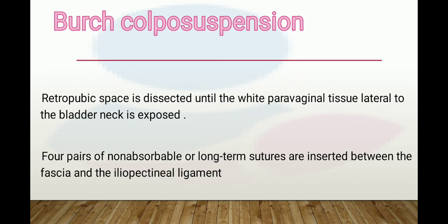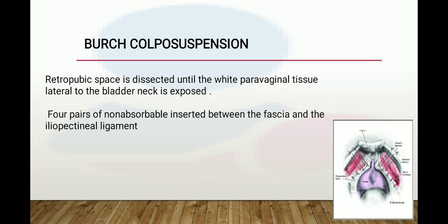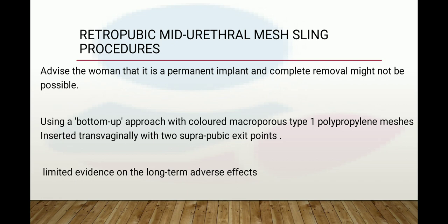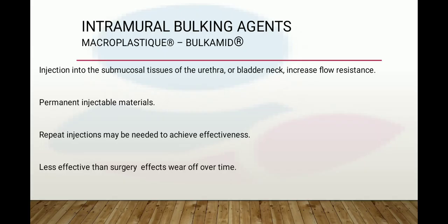Burch colposuspension involves dissecting the retropubic space until the wide paravaginal tissue lateral to the bladder neck is exposed, and four pairs of non-absorbable or long-term sutures are inserted between the fascia and iliopectineal ligaments. Complications include voiding difficulties (common and usually resolving in the short term; if persistent, the patient may need clean intermittent self-catheterization) and urgency urinary incontinence. The retropubic mid-urethral mesh sling is a permanent implant using a colored macroporous type 1 polypropylene mesh inserted transvaginally with two suprapubic exit points; complete removal might be possible but evidence on long-term adverse effects is limited.